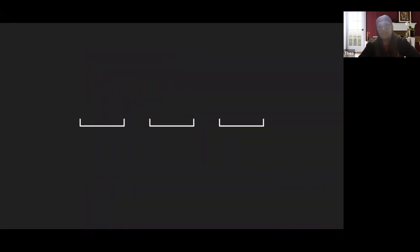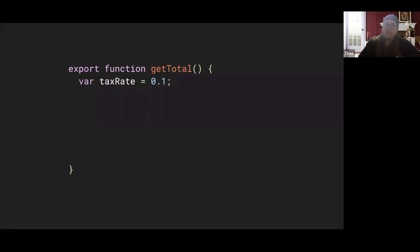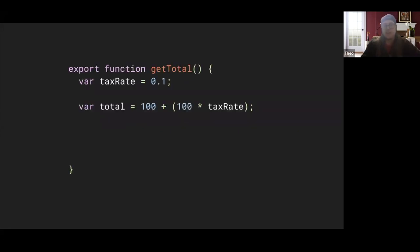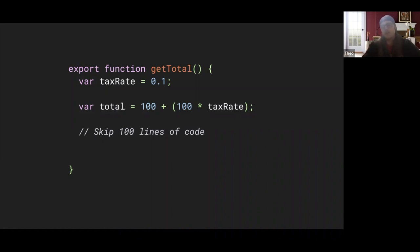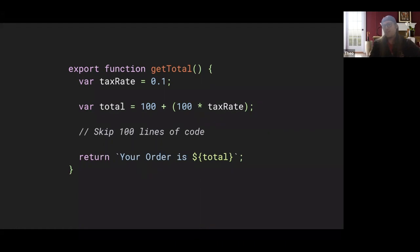Now we're going to talk about variable declarations. We'll assume you have three spots of working memory. Originally JavaScript only had one type of variable declaration called var. If you're reading code with a var, you'd have that variable in your working memory. You get another variable, then a bunch of stuff happens over maybe 100 lines. You're taking in all this extra information trying to store it. When you get to the bottom, it's really hard to say what the total is — there's no predictability, because the total could be changed by adding a discount or shipping. We don't know what's going to happen in those 100 lines.